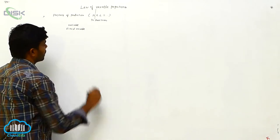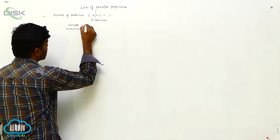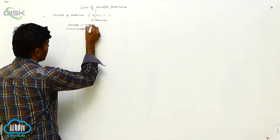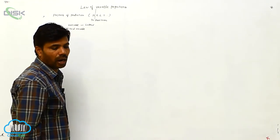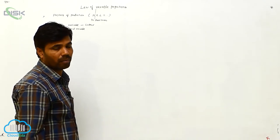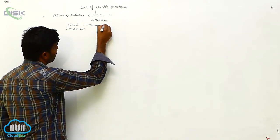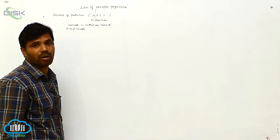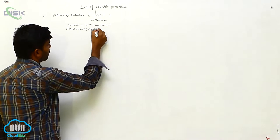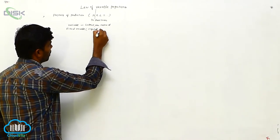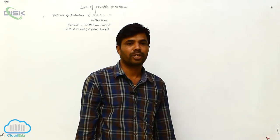The variable factors are Labor and Raw Material. Labor and Raw Material are the variable factors. The fixed factors are Capital and Land. In the short term, capital and land remain constant.